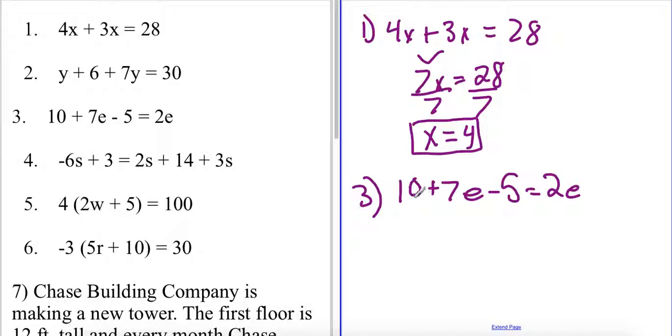Here we have a positive 10 as a constant, we have another positive coefficient of 7, and here we have a negative constant of 5. So when I combine my constants of 10 and 5, I'm actually going to combine them by subtracting. 10 minus 5 is going to give me 5 plus 7e equals 2e.